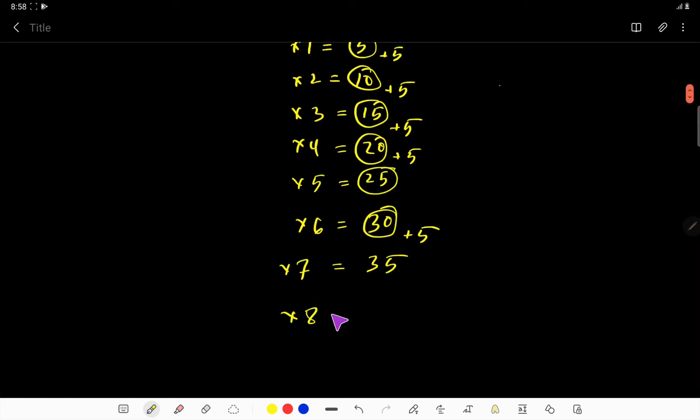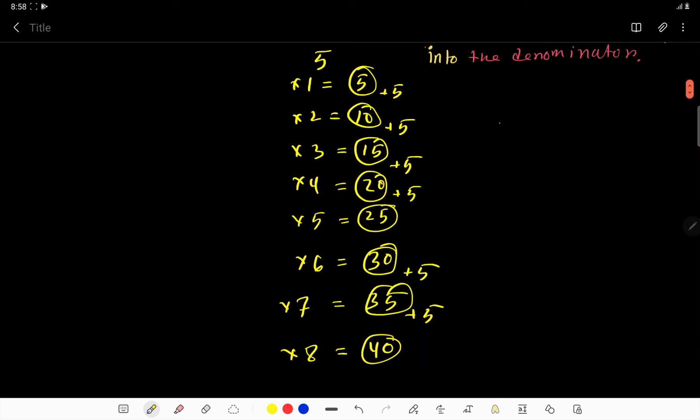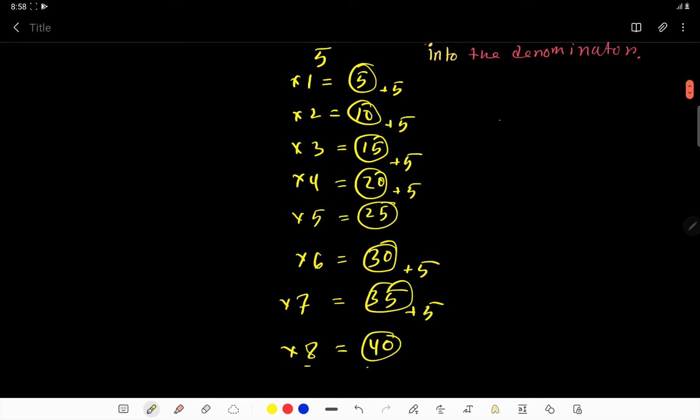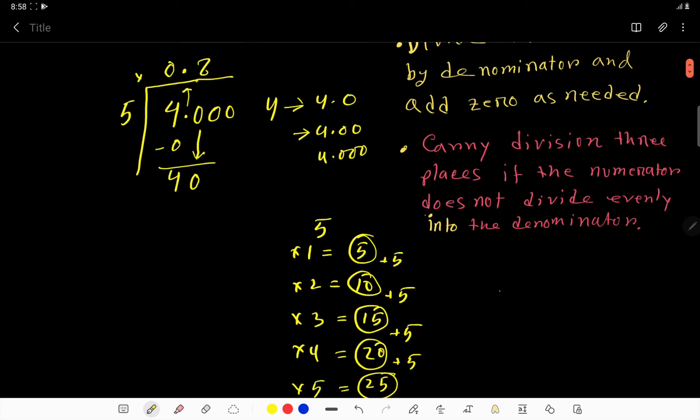Then 8. 5 times 8 is 40. 5 goes into 40 eight times.